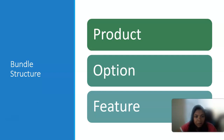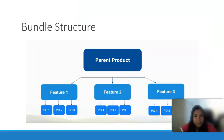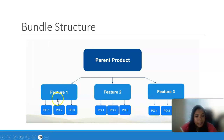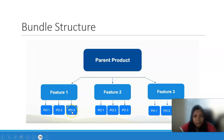Now that we're clear on what a bundle is and the types of bundles, there is something called bundle structure. It consists of product, option, and feature — these three are very important parts. In the bundle structure, there is a parent product — for example, a laptop — and in the laptop there are features like processor and memory, and then there are sub-products under it.